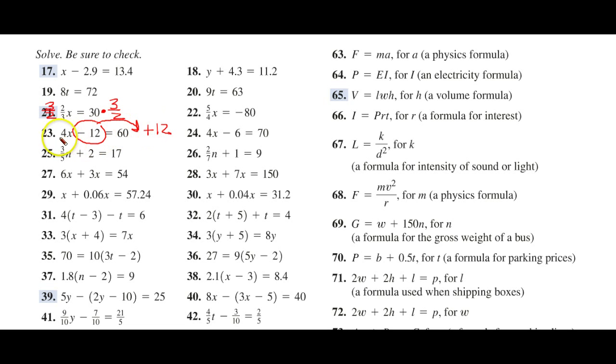Then divide both sides by four. Here, we're going to subtract two from both sides. And then we can use the reciprocal. Here, we're going to combine like terms. And divide by nine.